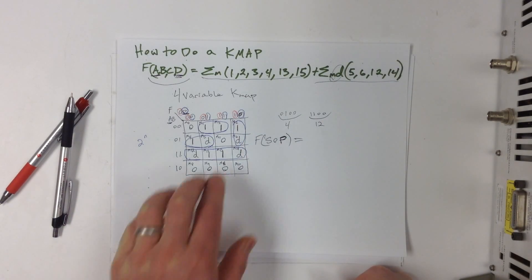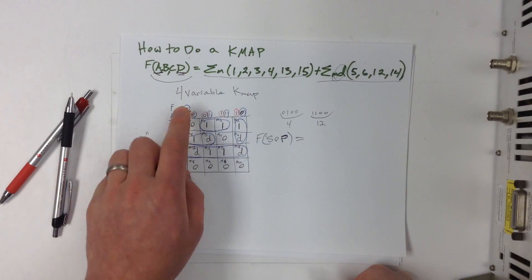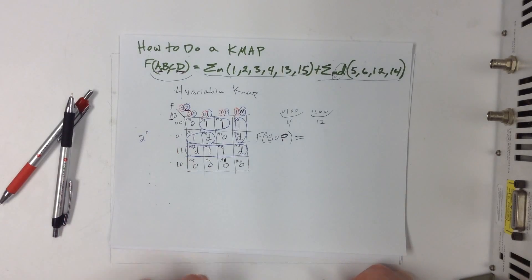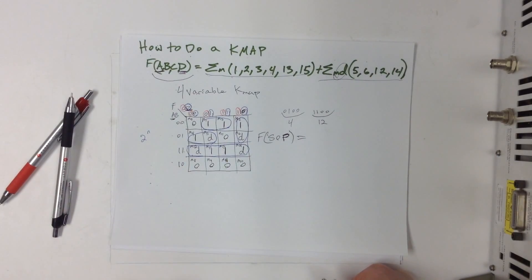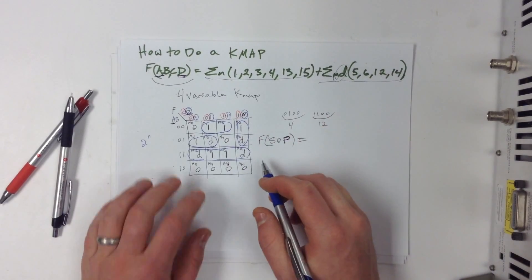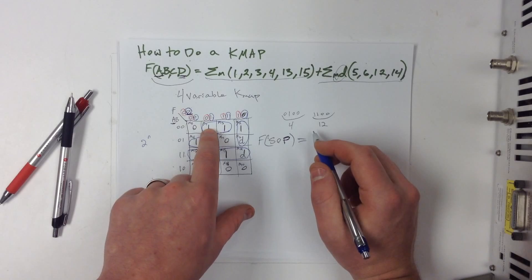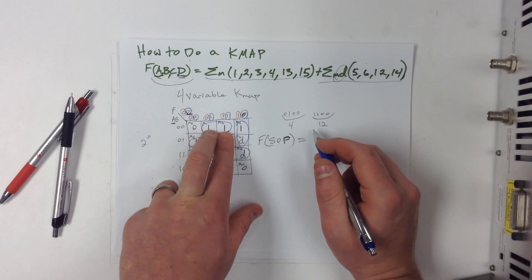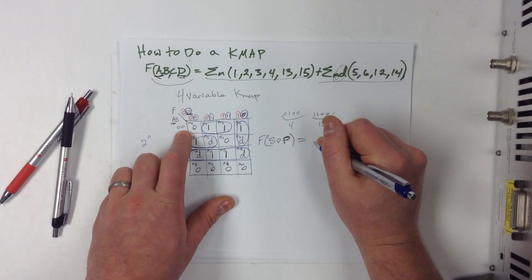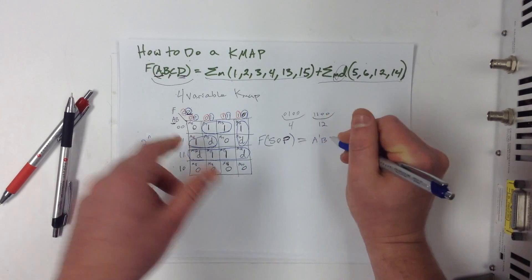So if we have a group of 2, then we can eliminate one of these variables. If we have a group of 4, then we can eliminate 2 of these variables. So always go for the biggest group that you can without grouping any 0's. So let's go ahead and start writing this up. I'm going to start with this one right here. So I know that these 2 have the bits in common, a 0 for A and a 0 for B. So let's go ahead and call that A0, B0.